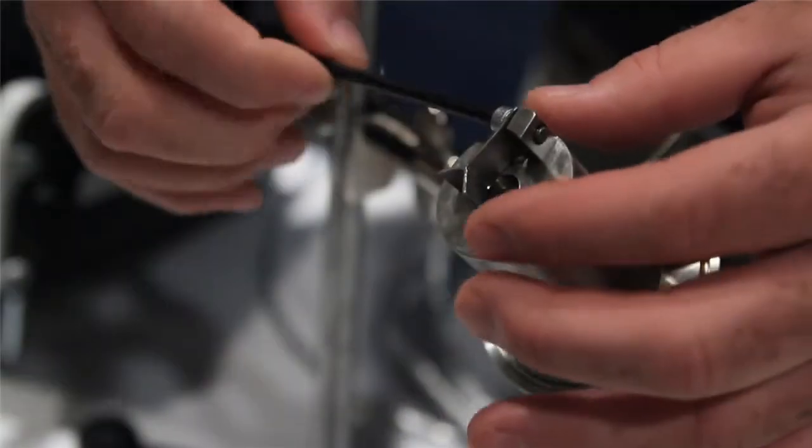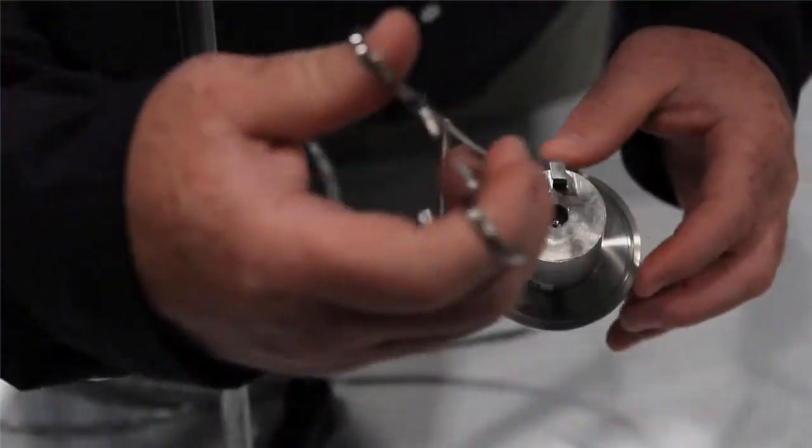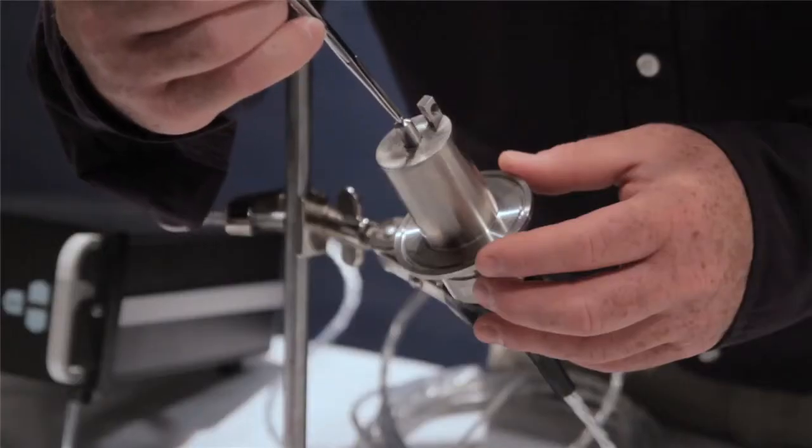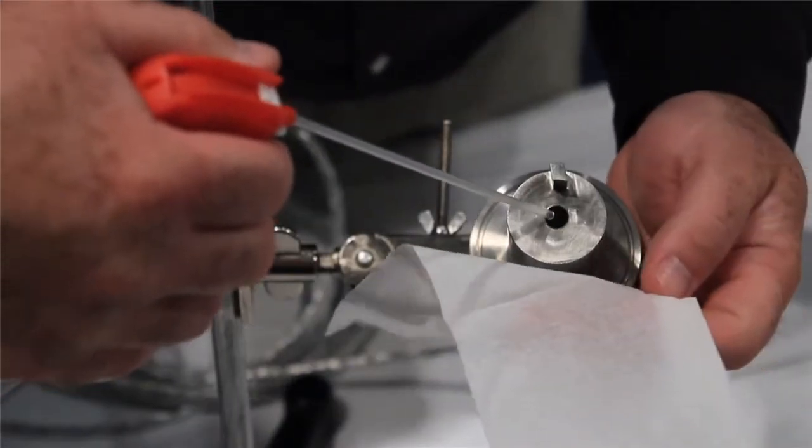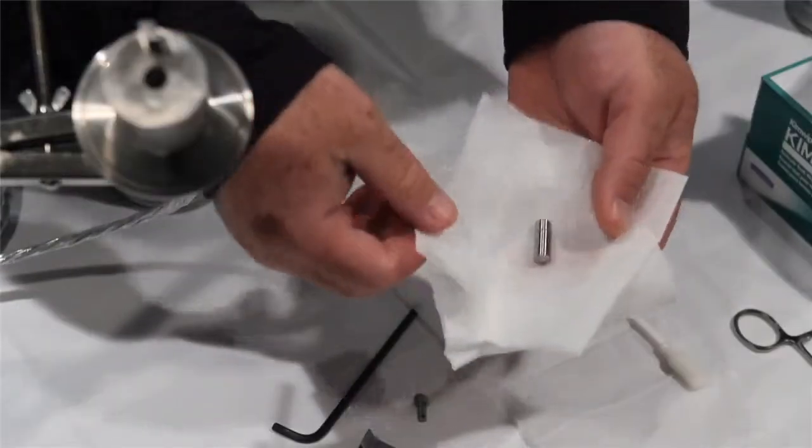We have now shown you how to clean the 311 sensor. This method applies to all 300 series sensors except the 372 and 374. Cleaning is the most critical step for viscosity measurement verification. We will now show you how to verify the sensor's viscosity measurement.